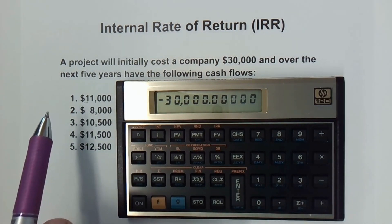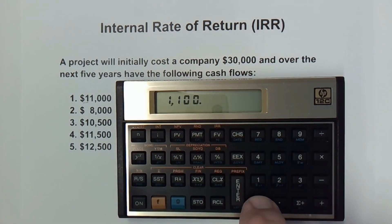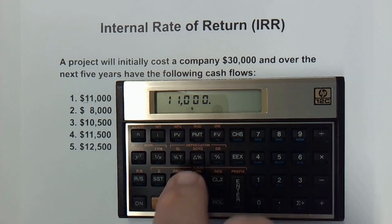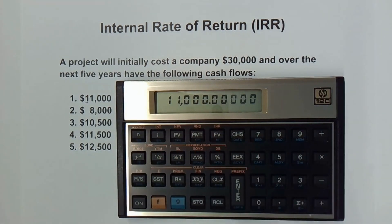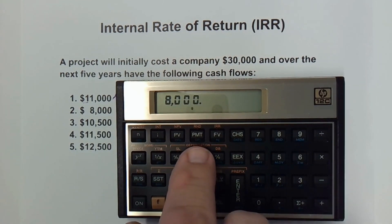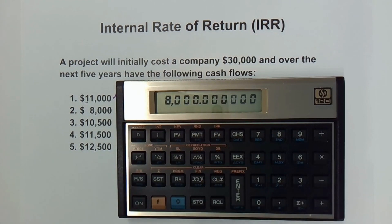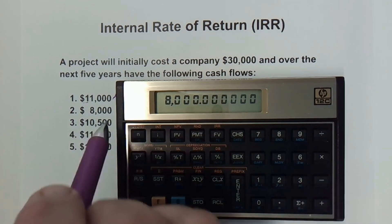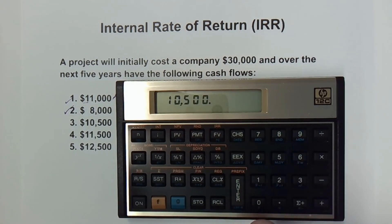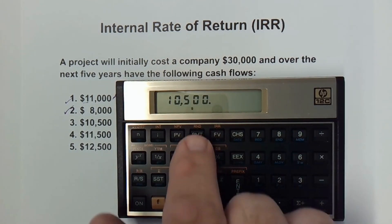Now I'm ready to enter the next cash flows. We have $11,000 coming in, so I'll enter 11,000, leave it positive, hit the blue G button, and hit CF sub-J. That's the first one. The next one is $8,000 — again hit the blue button and CF sub-J. The next one is $10,500 — blue button, CFJ. I like to check them off as I do them.